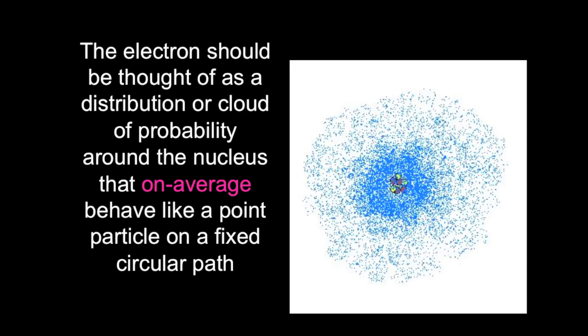And so, the image on the right, I've got the blue dots represent possible locations for an electron around a nucleus, but the average location we're going to call an orbit, and that is roughly circular around the nucleus.